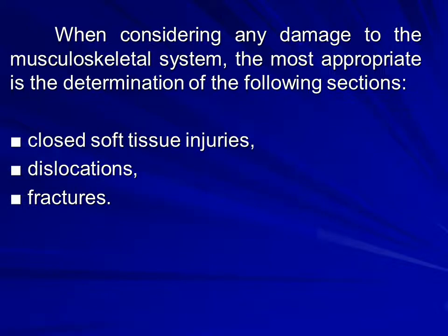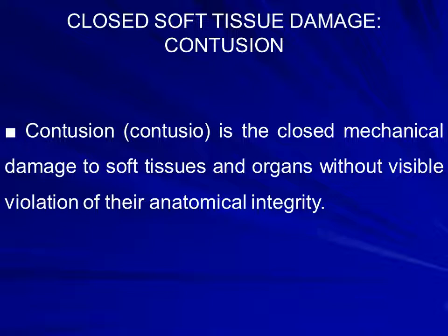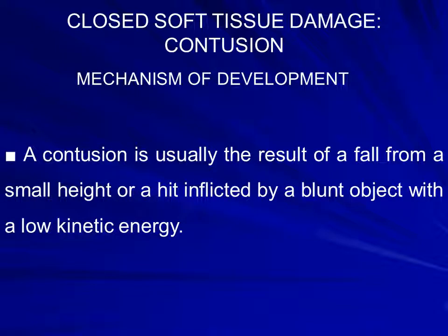When considering any damage to the musculoskeletal system, the most appropriate sections are: closed soft tissue injuries, dislocations, and fractures. Contusion is the closed mechanical damage to soft tissue and organs without visible violation of their anatomical integrity. A contusion is usually the result of a fall from a small height or a hit inflicted by a blunt object with low kinetic energy.